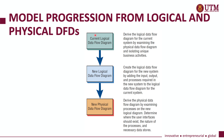It will always start with the current logical data flow diagram, which shows the current system of the business organization itself. Next, for a new logical data flow diagram, we start to put any inputs, outputs, and processes that are required in the new or proposed system.